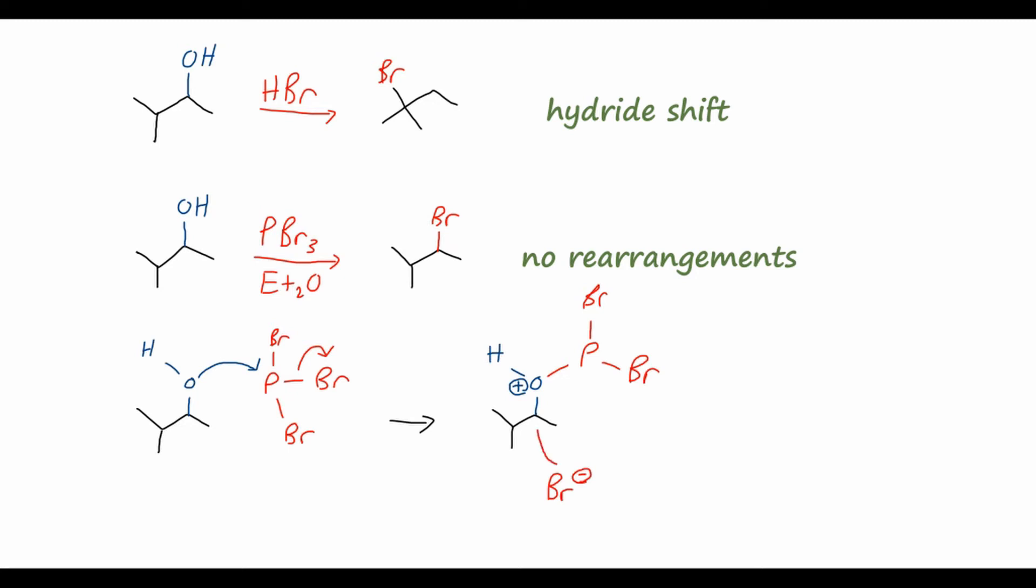So we can have this bromide here that came off of the phosphorus tribromide, and it will go in in an SN2 mechanism, kick off the oxygen, and we will be left with our alkyl bromide, with no rearrangements, because we haven't formed a carbocation.